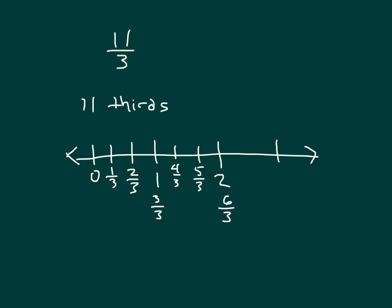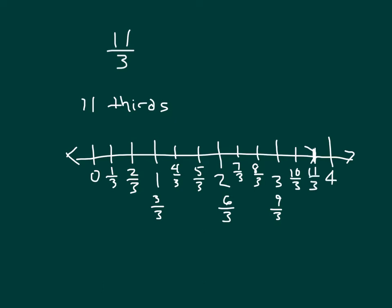We go further to 3. Between 2 and 3 we have 7 thirds, 8 thirds — which is 2 and 1 third — and 2 and 2 thirds to 3. And 3 is 9 thirds, but we're still not there. We have 11 thirds, so we extend to 4, dividing that section into 3 parts: 9 thirds, 10 thirds, 11 thirds. That's where 11 thirds lands.